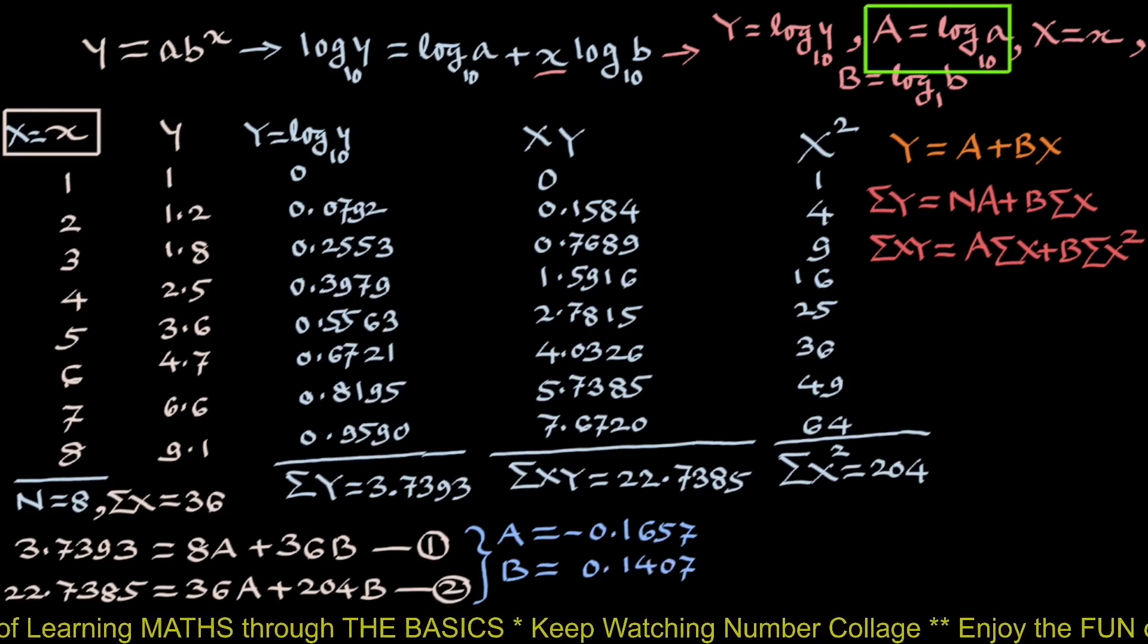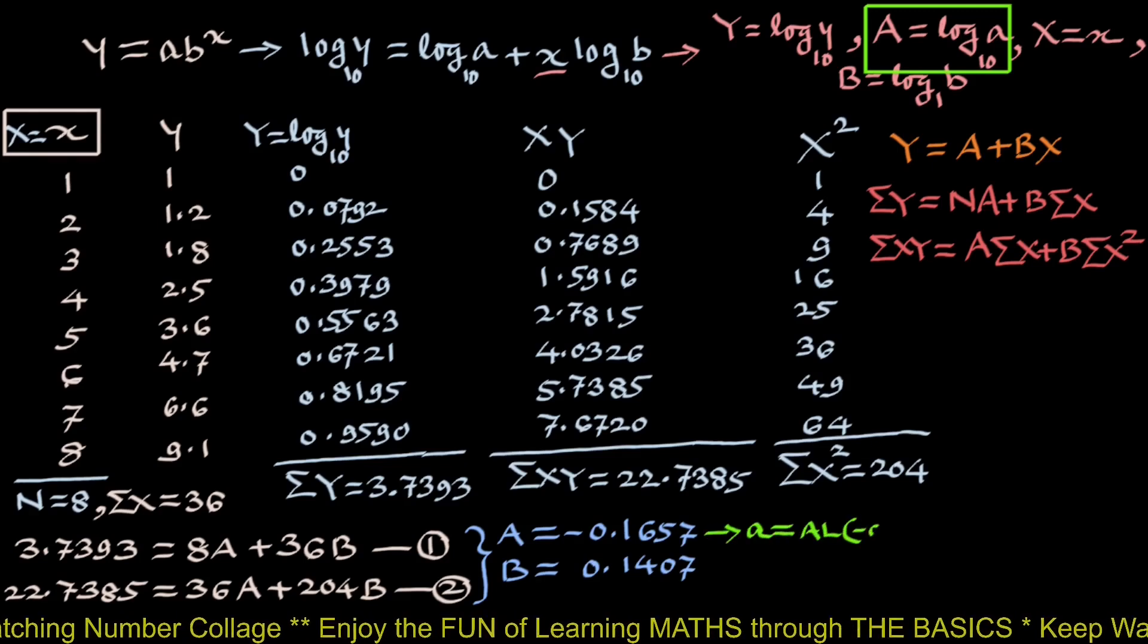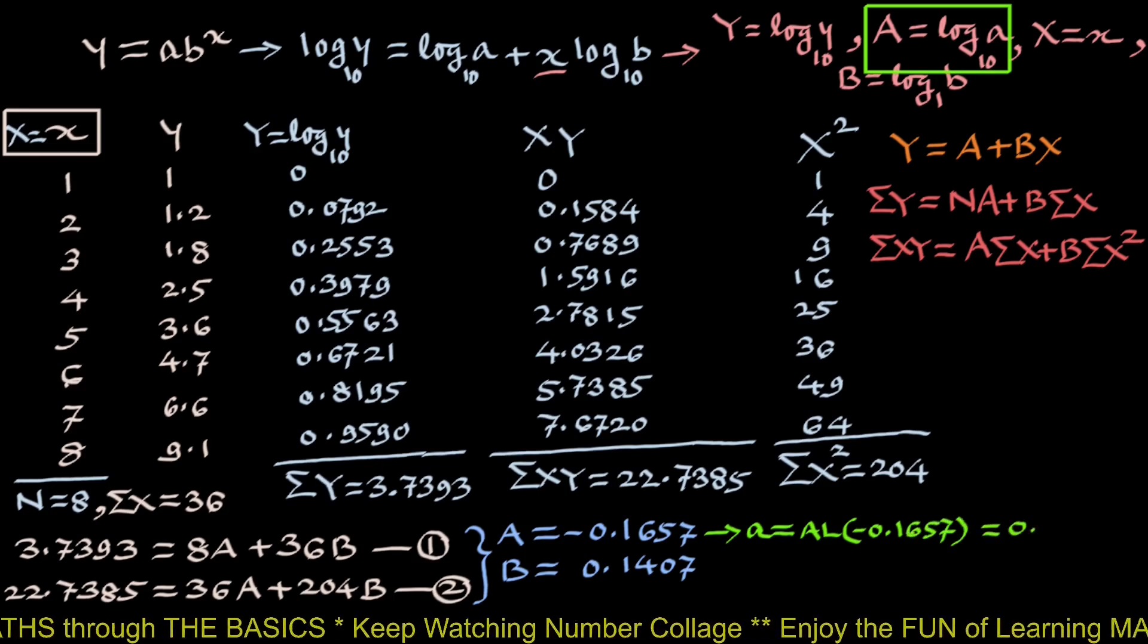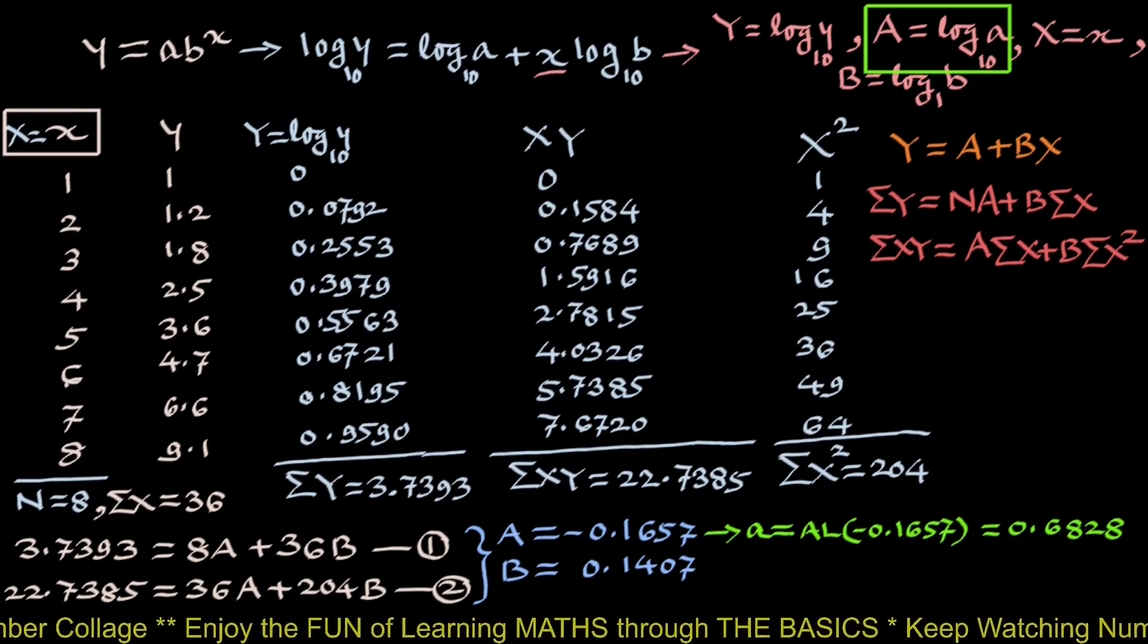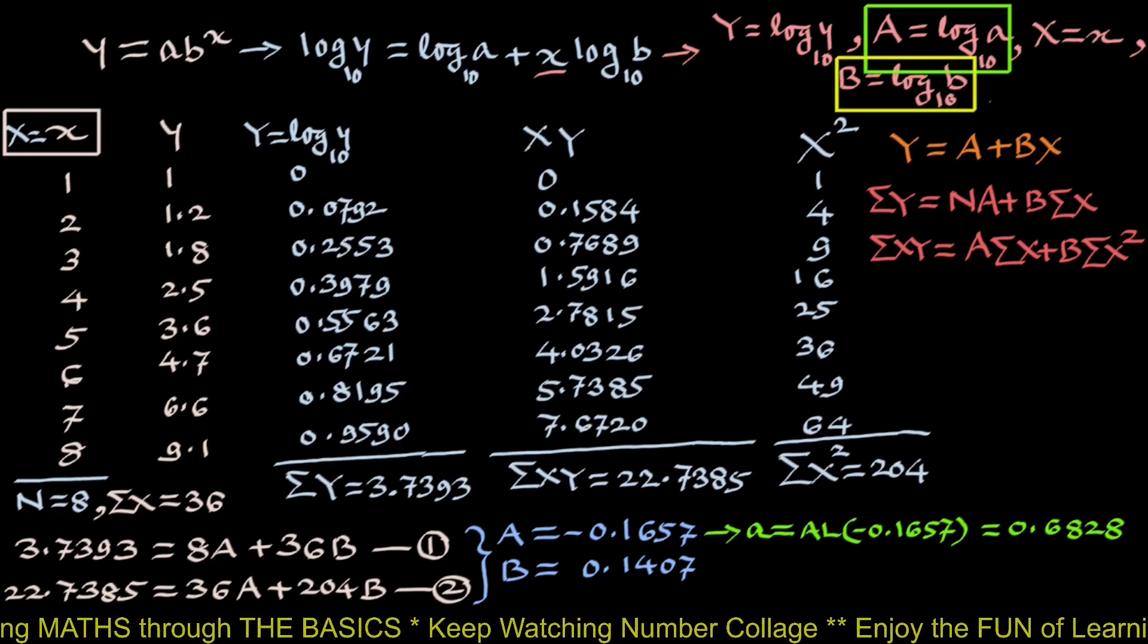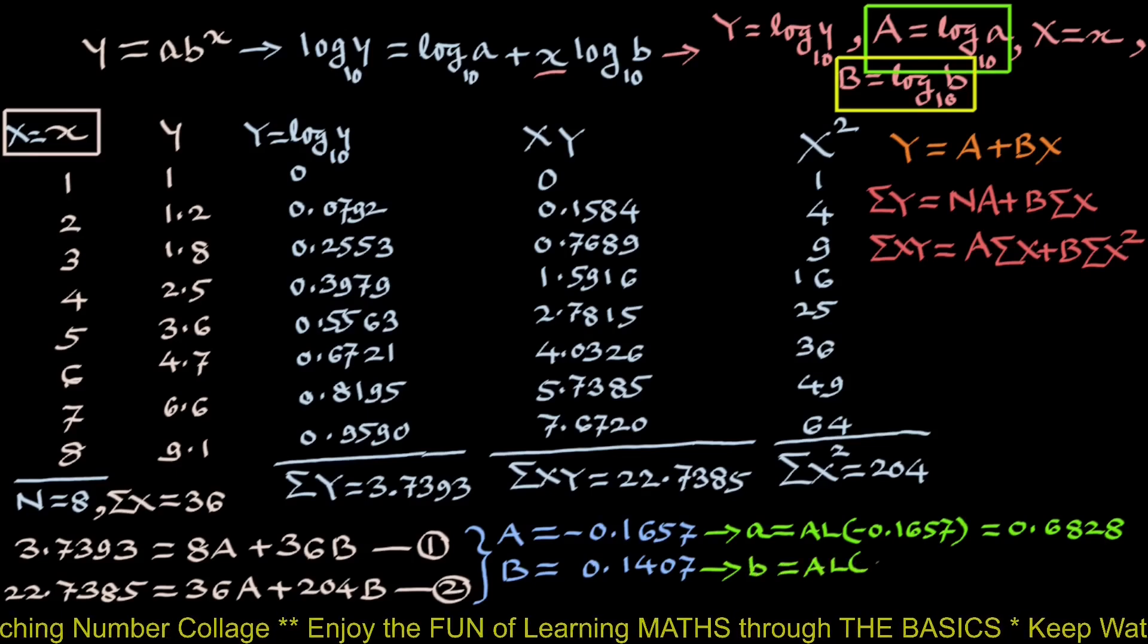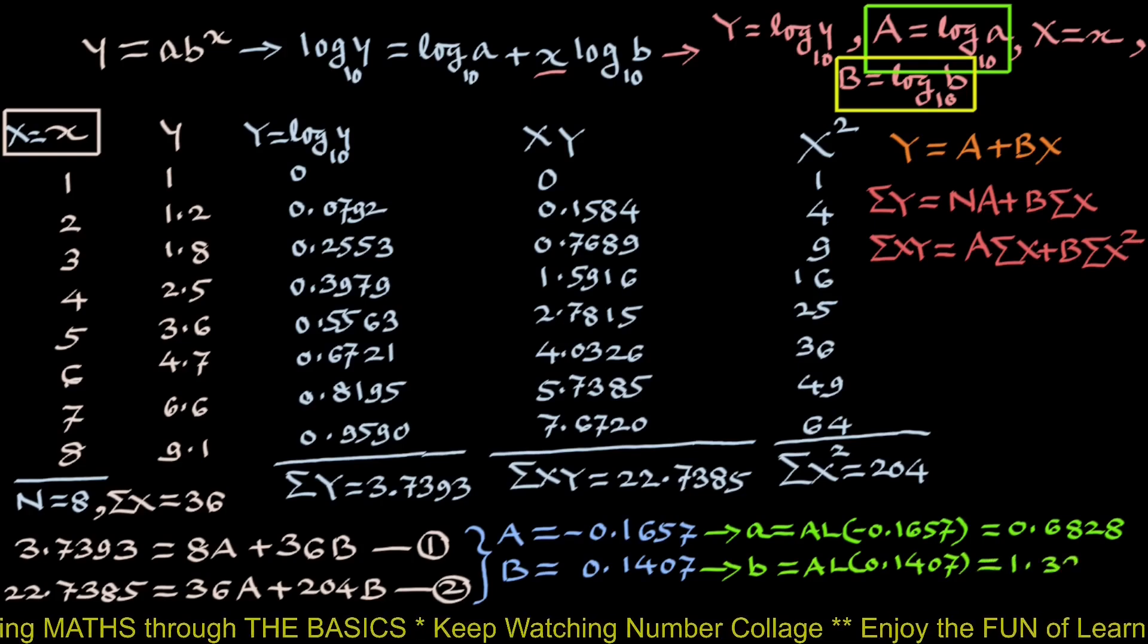Log small a to the base 10, so small a will be antilog of minus 0.1657 which will be 0.6828. And B is log small b to the base 10, so small b will be antilog of 0.1407 which is 1.3828.